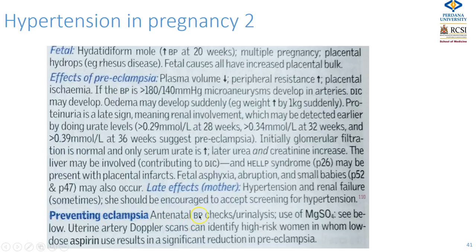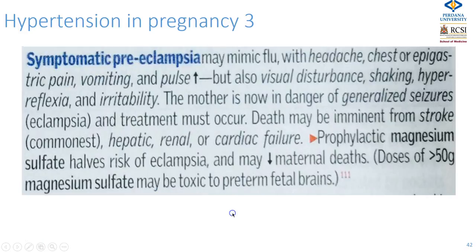The important thing in preventing pre-eclampsia is to be aware of it, check blood pressure regularly, and always dipstick the urine. If the patient persistently has raised blood pressure, proteinuria on urinalysis, and palpable oedema, refer urgently. Pre-eclampsia can be mistaken for flu — presenting with headache, chest or epigastric pain, and vomiting. Visual disturbances described as like looking through frosted glass, shaking, and hyperreflexia are very late signs; at this point the woman is in danger of generalised seizures and treatment must be immediate, as death is usually not far away once eclampsia develops.